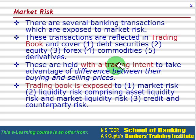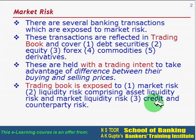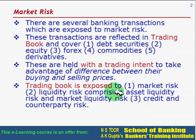Which risk is the trading book exposed to? The trading book is exposed to: number one, market risk; number two, liquidity risk comprising asset liquidity risk and market liquidity risk; and then credit and counterparty risk. These are the various risks to which the trading book is exposed.